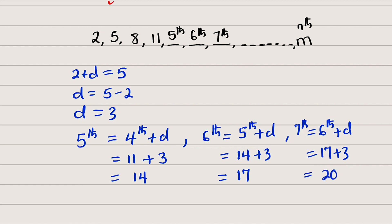Therefore the fifth, sixth, and seventh terms are 14, 17, and 20 respectively. We have 14, 17, and 20.